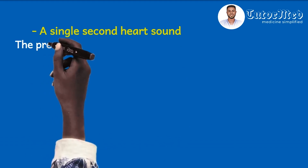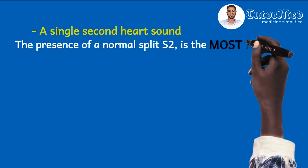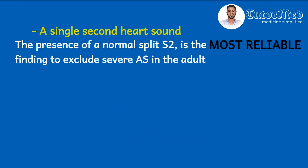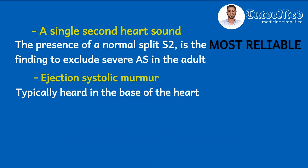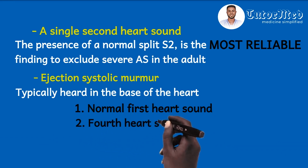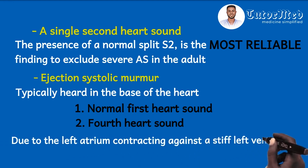The second finding involves the second heart sound: S2 is formed by closure of the pulmonic and aortic valves, so a single S2 is suggestive of aortic stenosis. In fact, the presence of a normal split S2 is the most reliable finding to exclude severe aortic stenosis in adults. The third finding is an ejection systolic murmur, typically heard at the base of the heart in the aortic area. Other findings include a normal first heart sound and a fourth heart sound, which results from the left atrium contracting against a stiff left ventricle whose outflow is obstructed.